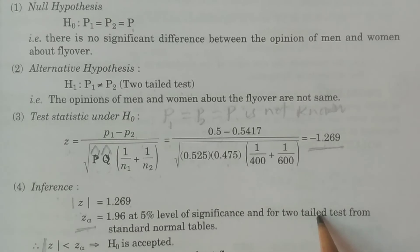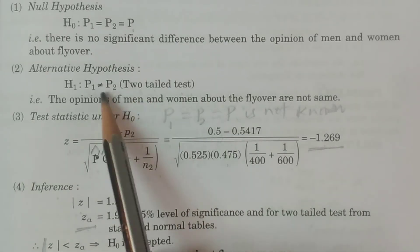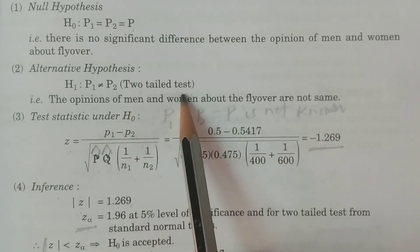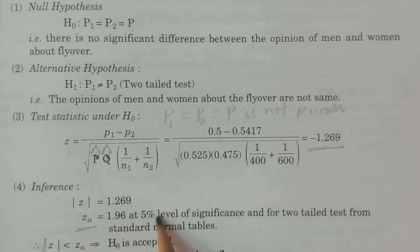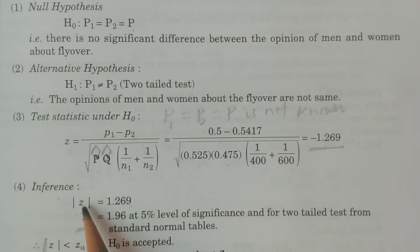Therefore, modulus of Z is 1.269, and Z alpha is 1.96. Comparing these: 1.269 is less than 1.96. Therefore, modulus of Z is less than Z alpha, which implies H naught is accepted.